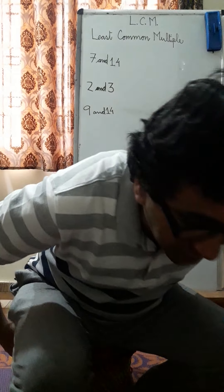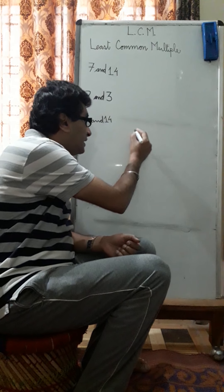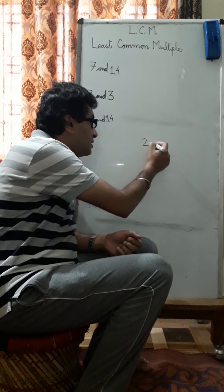Now today what we are going to do is we are going to learn the common division method, which is a very easy method for all of you to find out the LCM, to find out the least common multiple. So on the board you will see many things, some numbers are there. So let me start by finding the LCM of 2 and 3.